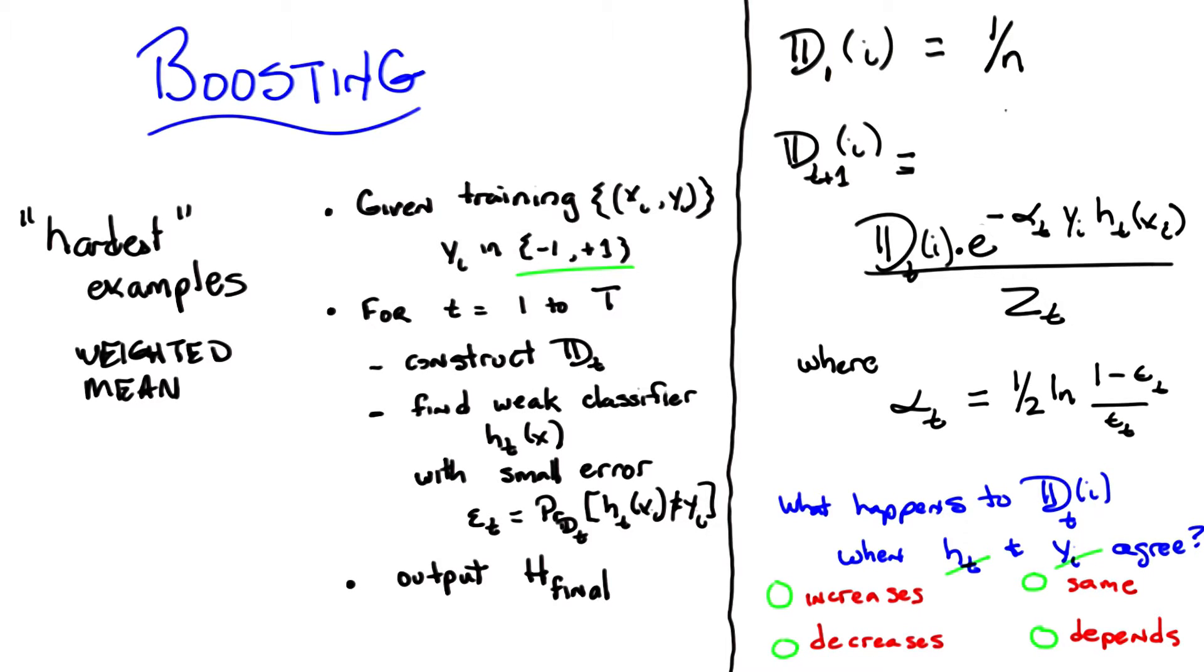Okay Michael, what's the answer? All right, so you kind of were walking us through it, but basically, if y_i and h_t agree, that means they're both negative or they're both positive, they're equal to each other.